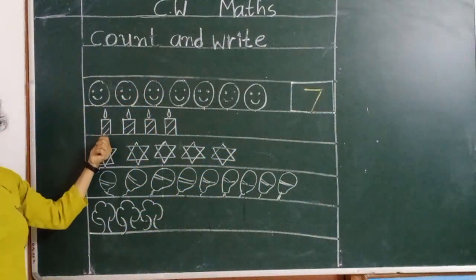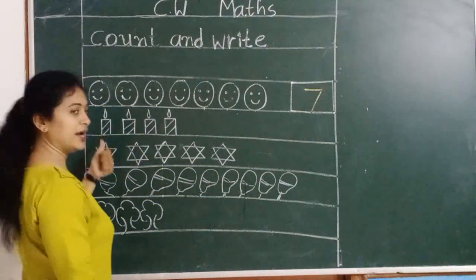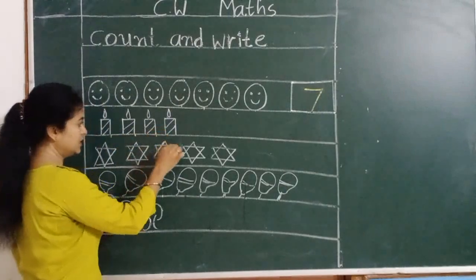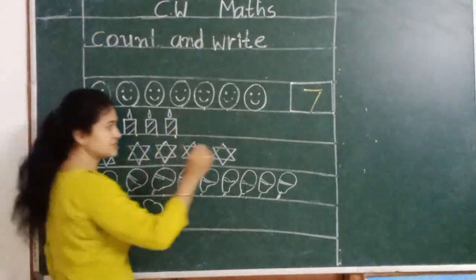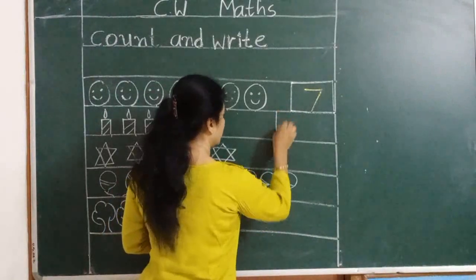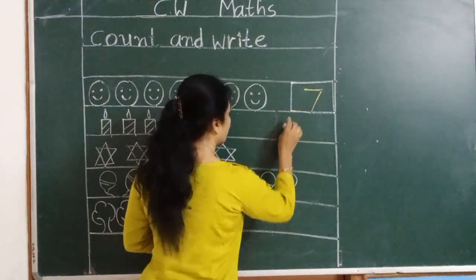Which objects here? Candles. So let's recount. 1, 2, 3 and 4 candles here. So we should write here number 4.